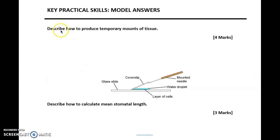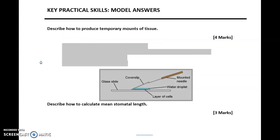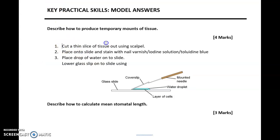I've compiled these model answers based on a range of different mark schemes from across lots of different A-level biology exam boards, looking at exam papers from the past 15 to 20 years. Hopefully, being able to reproduce something similar to this will guarantee you full marks. Looking at the first question: describe how to produce temporary mounts of tissue. If we uncover the answer for this, starting off, number one is you need to cut a thin slice of tissue out using a scalpel.